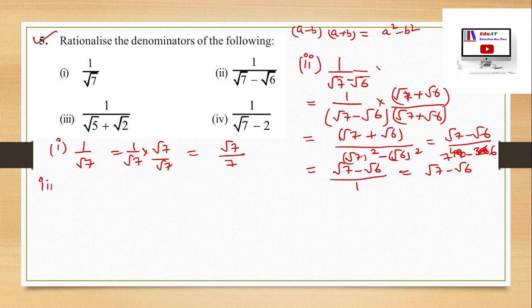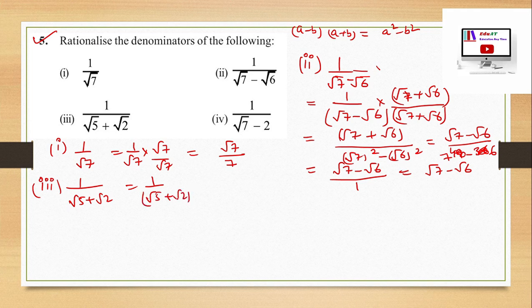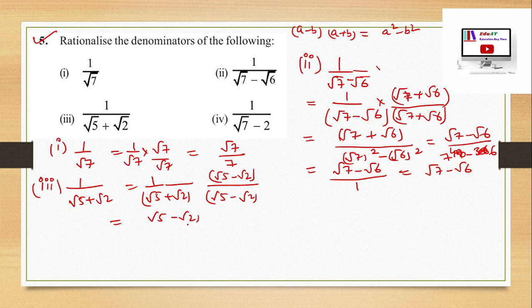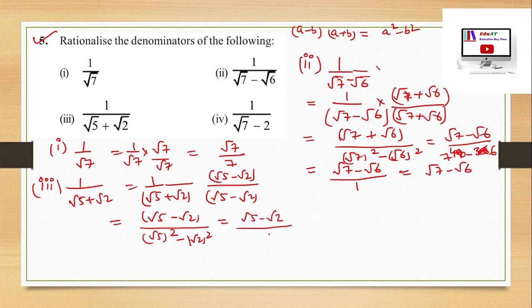Part 3: 1/(√5 + √2). Rationalize by multiplying by (√5 − √2). The denominator becomes (√5)² − (√2)² = 5 − 2 = 3. So the answer is (√5 − √2)/3.